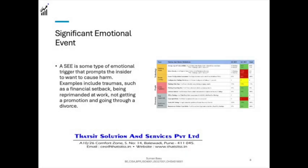Another major finding from surveys is that a significant emotional event actually turns a well-meaning, good employee into a rogue employee. A significant emotional event is some type of emotional trigger that prompts an insider to cause harm to the organization. Examples include traumas such as financial setback, being reprimanded at work, not getting a promotion, or going through a divorce. These incidents are capable of turning the mental state of an employee, who under the influence of an SEE will act in ways they otherwise would not.